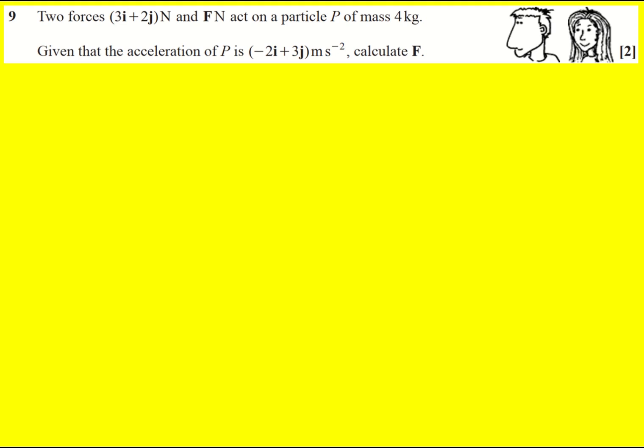Two forces are acting on a particle P of mass 4 kg given the acceleration and we're asked to calculate F. So what we're going to use is F equals ma in vector form.